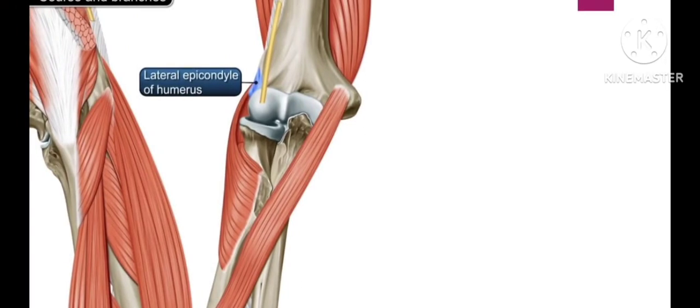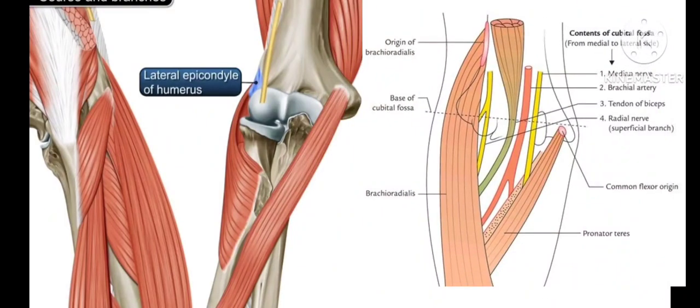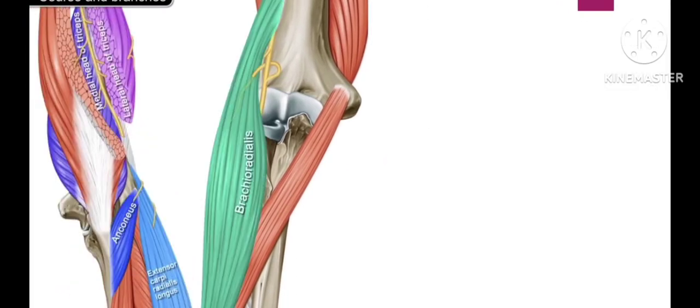The radial nerve winds around to the anterior side at the lateral epicondyle of the humerus, and here we study the cubital fossa. The contents of the cubital fossa include the median nerve, brachial artery, biceps tendon, and radial nerve. So the radial nerve is also a content of the cubital fossa.